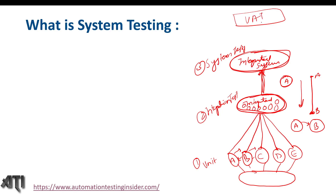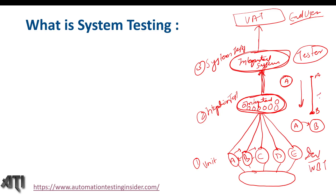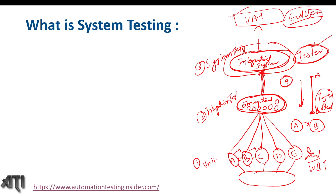The fourth level is UAT, which is done by the end user. System testing is completely done by the tester — in some companies with the help of the developer as well. System testing is the phase where testers are completely involved, with no involvement of the developer or the end user. UAT is completely by the end user.